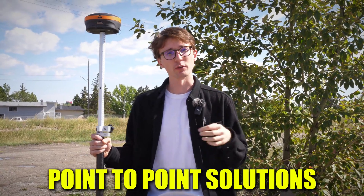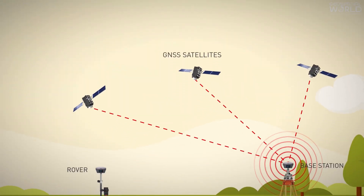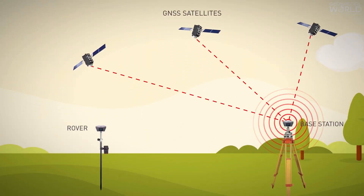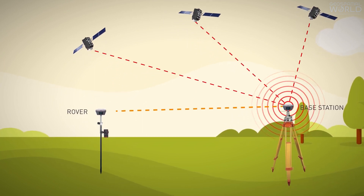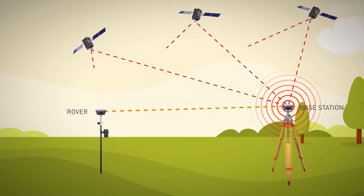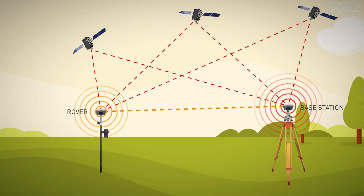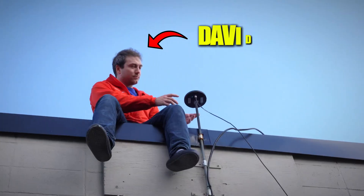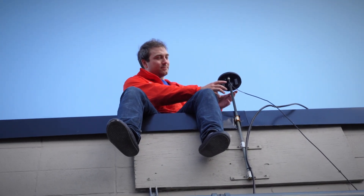The second term is a point-to-point solution, which is a lot simpler than a virtual reference station. We're not generating anything extra — there's no fancy software. All we're doing is sending the corrections over the network instead of over something like UHF, like we traditionally would have. I can use my own base station, connect to a base station someone else is hosting, or have one permanently mounted on my office, which is something we do here at Benchmark.